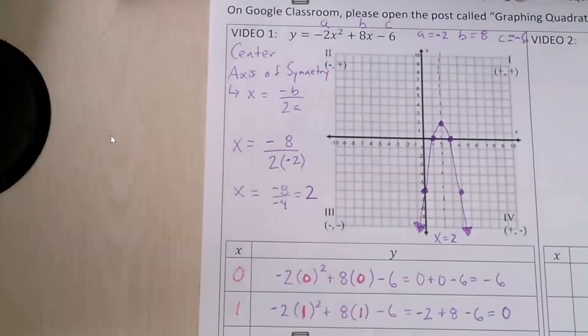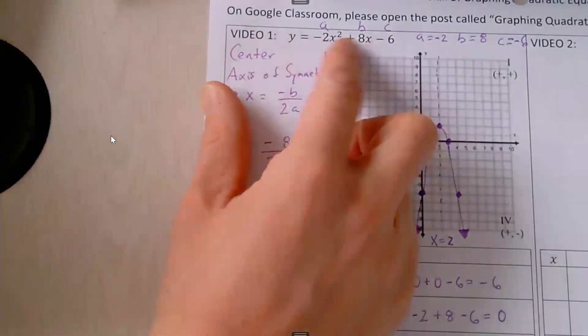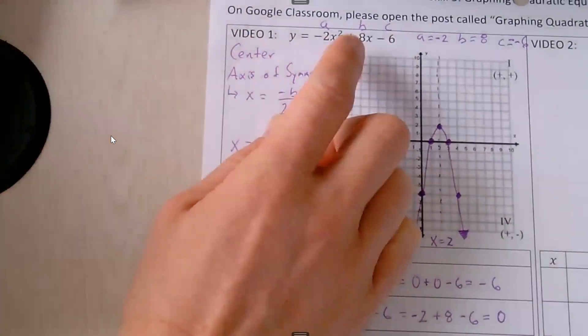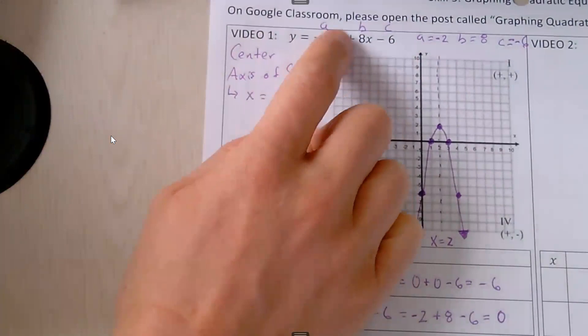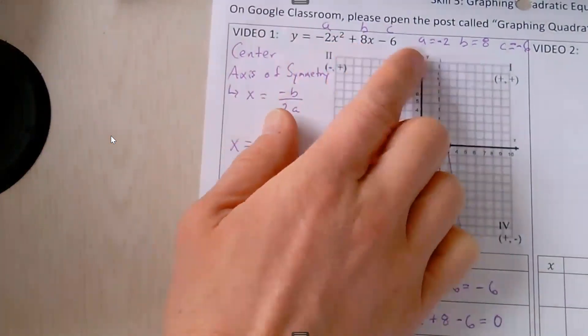In our last video, we showed how to graph a quadratic equation when it is in standard form. In standard form, there are no parentheses, and notice that we have some x to the second power, and then we can have some other terms as well.